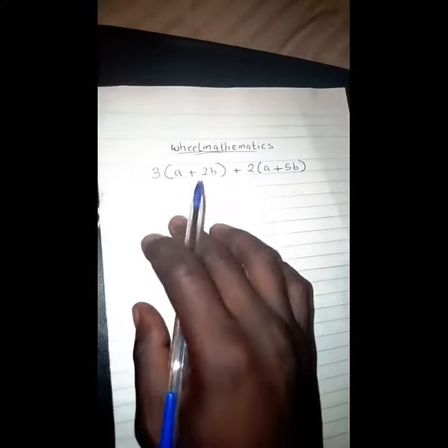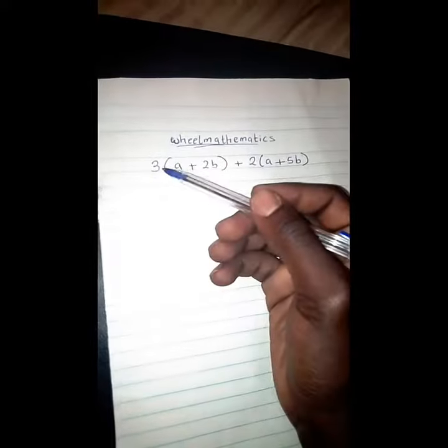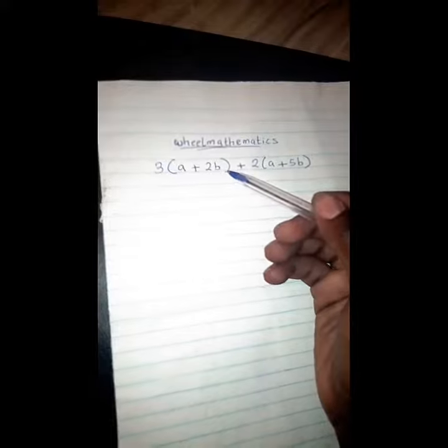Check it. So we got 3 and the bracket is A plus 2B, in addition is 2 bracket A plus 5B. Now let's find an answer to the question.